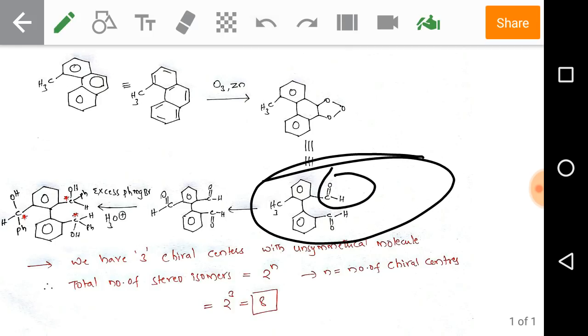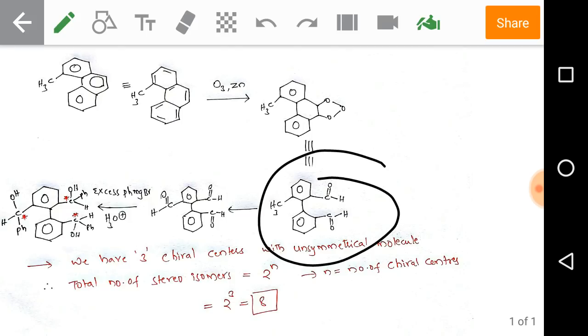After that, so many aspirants can think there is only one possible ozonolysis and we get two aldehydes. But here is the key logic: we need to think deep. We have another methyl group which is also affected by the ozone and zinc, that means ozonolysis followed by reduction. There is a possibility of formation of aldehyde on the methyl group. The methyl group is also oxidized by ozone.